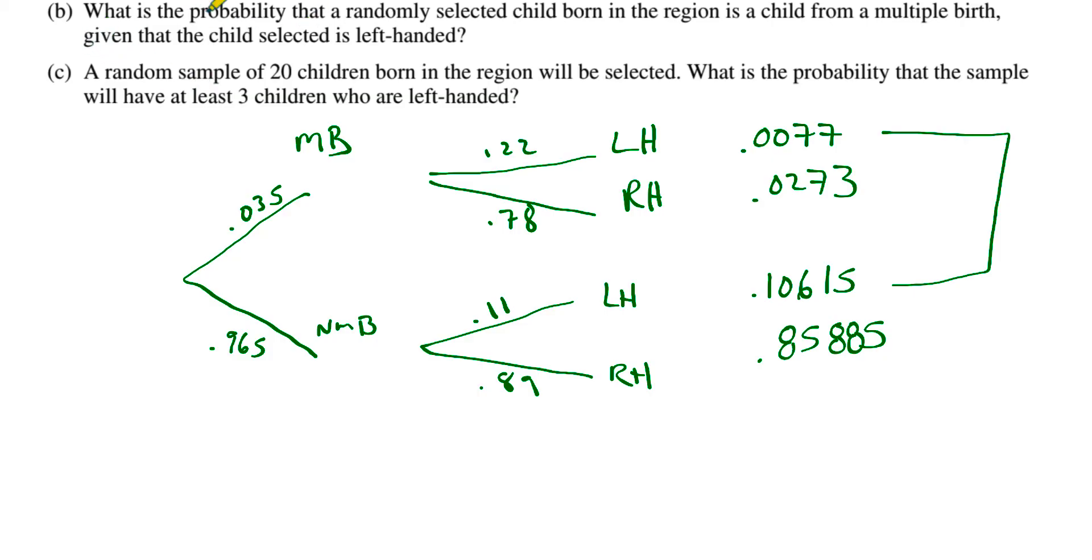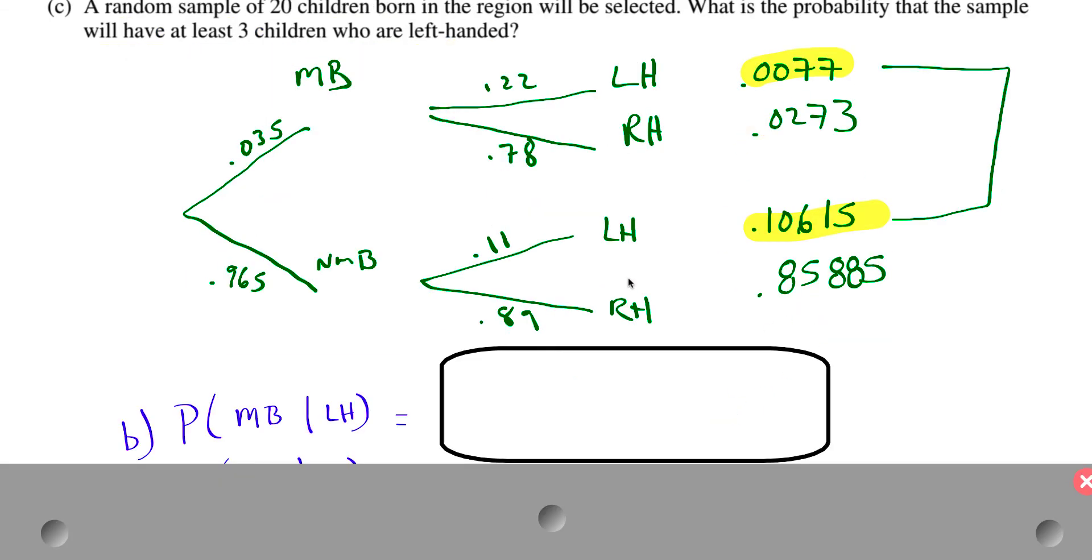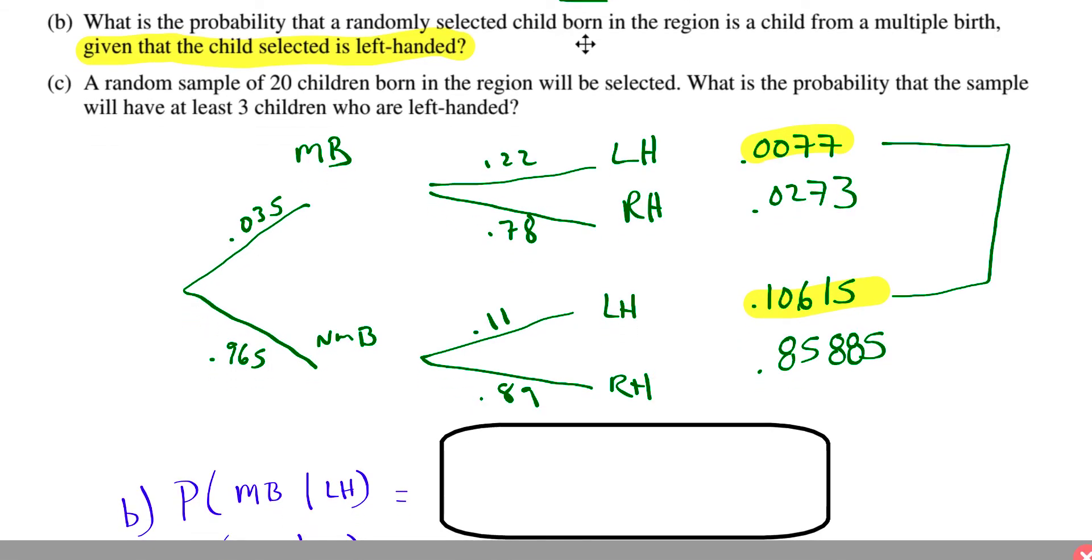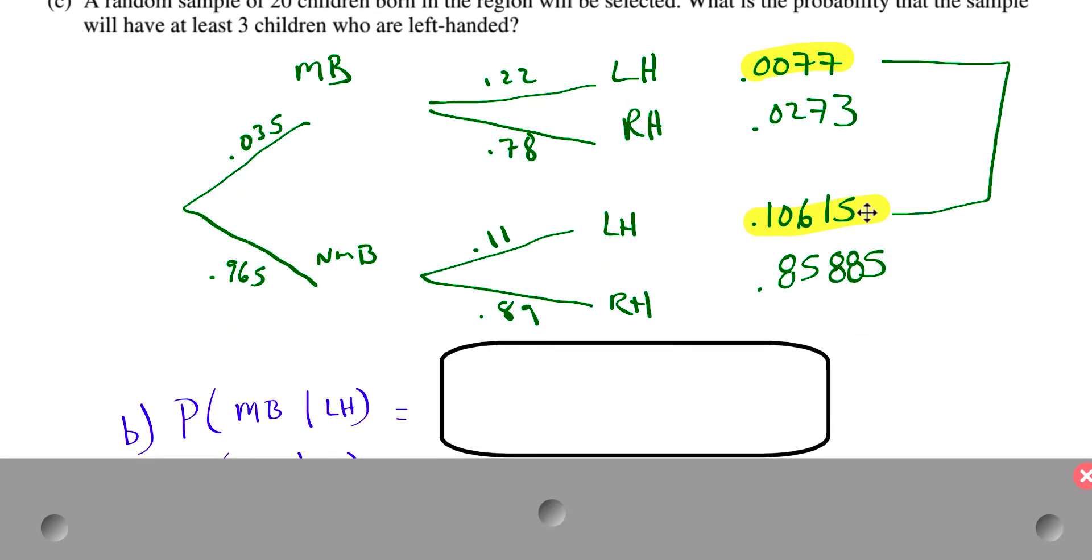So looking at part B now, what is the probability that a randomly selected child born in the region is a child from multiple birth, given that the child selected is left-handed? So that means I'm only looking at left-handed children. In this whole tree diagram here, we're talking about this and this. So it's out of those two combined. That's the answer we just got for A.